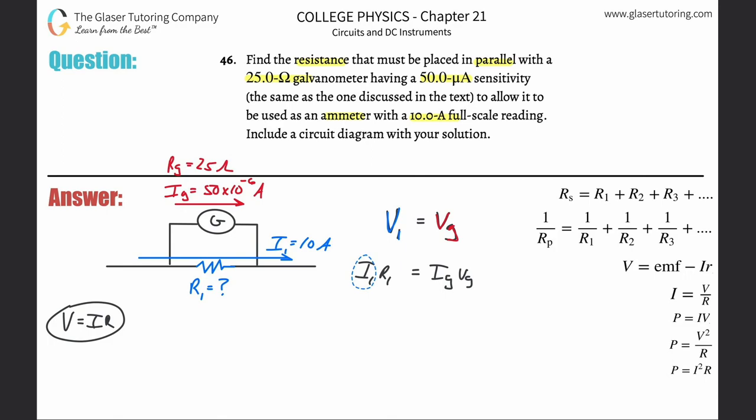Do we know all of those three pieces? Of course we do. The current flowing through the galvanometer they told us was 50 times 10 to the minus 6 amps. The resistance of that galvanometer they told us was 25 ohms. And then divide that by the current flowing through R1, which was 10 amps.